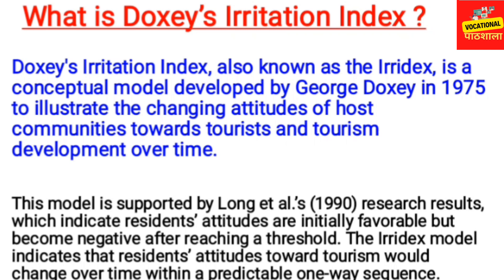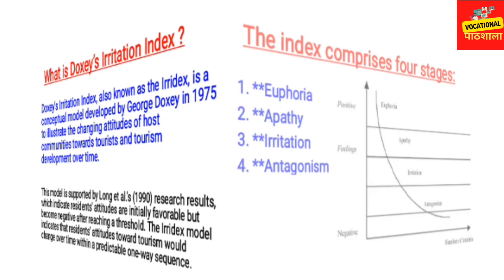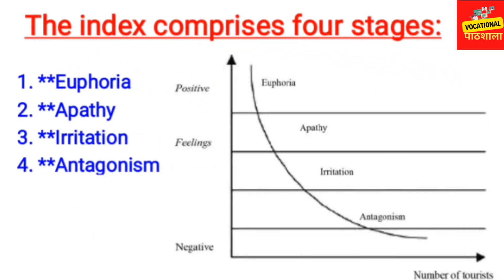Residents' attitudes are initially favourable but become negative after reaching a threshold. When tourism reaches a threshold in some area, people's attitude becomes negative. The irritation model indicates that residents' attitudes to tourism change over time within a predictable one-way sequence. We will understand the stages of this sequence.